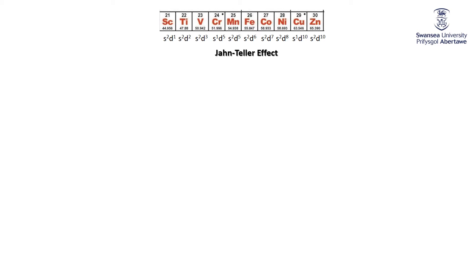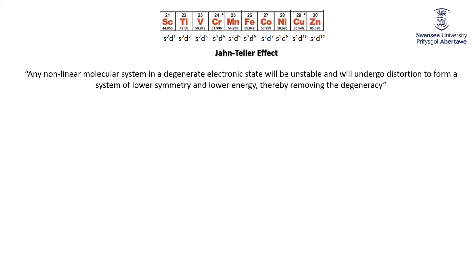This is the last discussion associated with octahedral complexes, and something you're going to encounter several times over the next couple of years: the so-called Jahn-Teller effect, which states that any non-linear molecular system in a degenerate electronic state will be unstable and will undergo distortion to form a system of lower symmetry and lower energy, thereby removing the degeneracy.